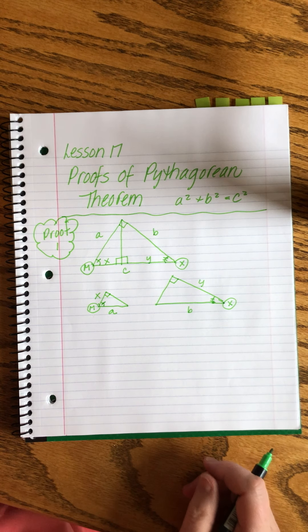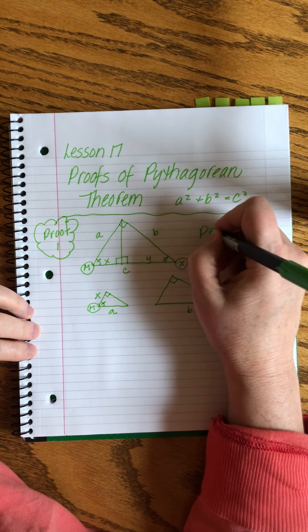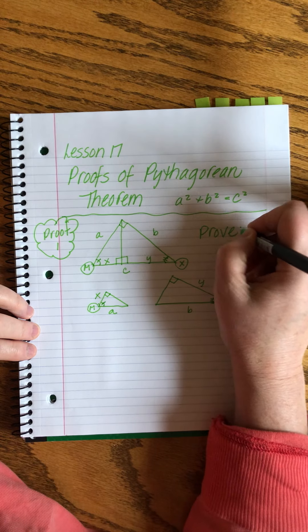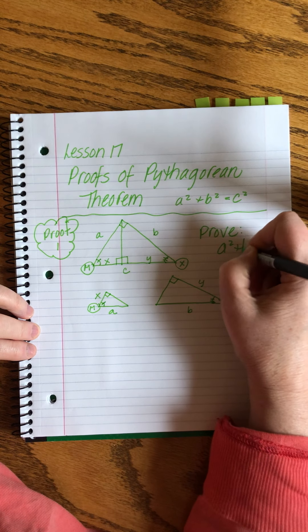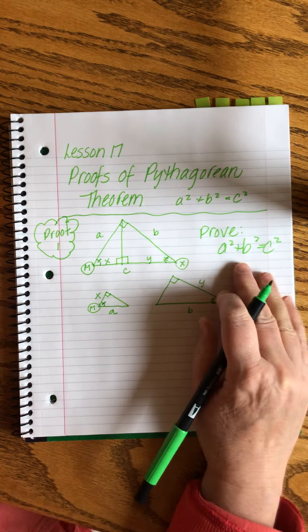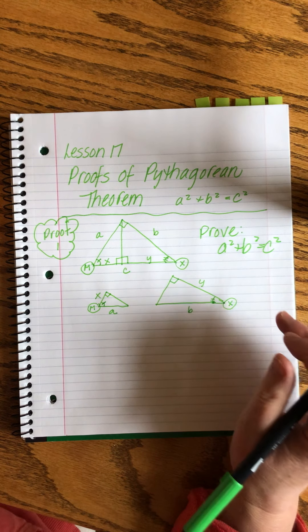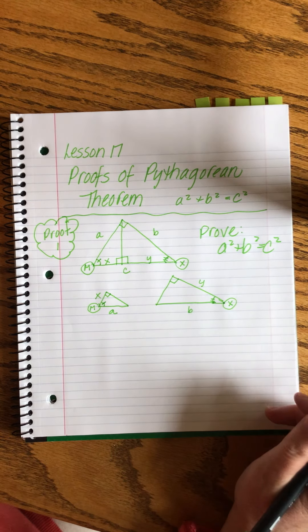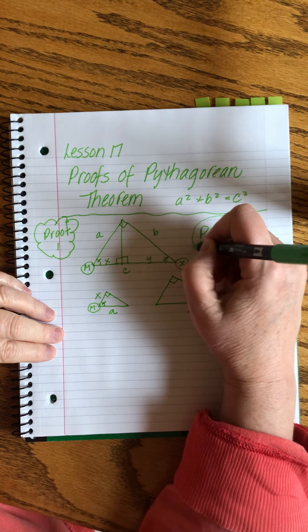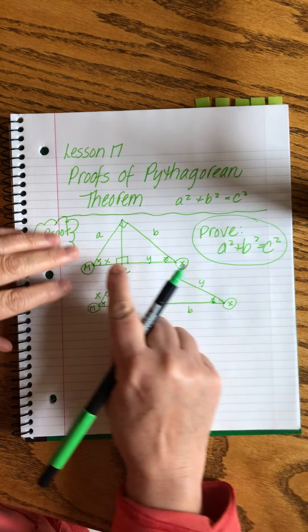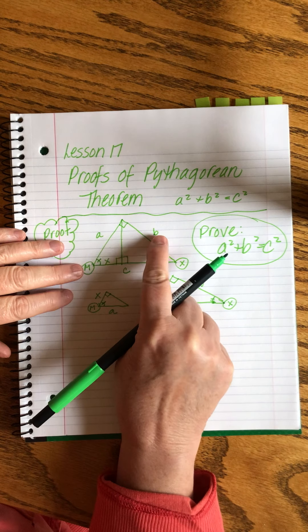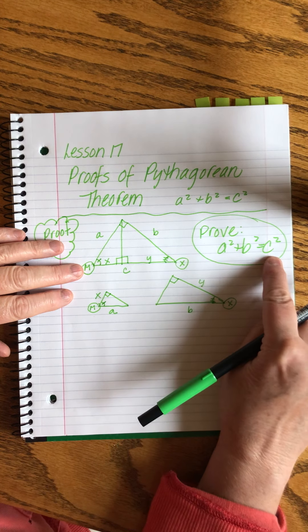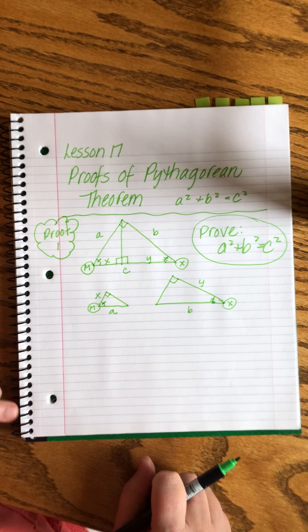So we're trying to prove that A squared plus B squared equals C squared. Whenever we start a proof, we have to know what we're trying to prove, right? Or that's our goal is to prove that. So I'm going to circle it so we don't forget. That's what we're trying to do. And here I'm referring to A, B, and C when I write that.